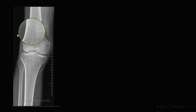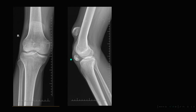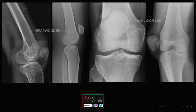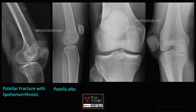Next, patellar cases: a high-riding patella (patella alta) with a bony lesion projected over the knee joint in lateral view, along with a fragment in the infrapatellar Hoffa's fat pad, represents an old patellar fracture. Other patellar cases include patellar fracture with lipohemarthrosis showing fat-fluid levels, patella alta, bipartite patella with an unfused superior pole, and patellar dislocation.